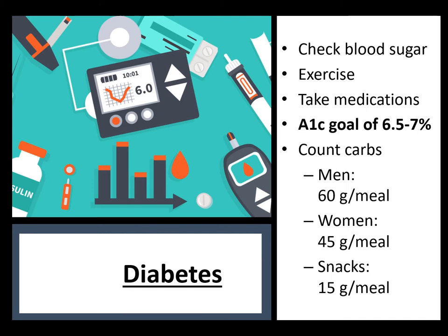Diabetes is very related to heart disease. If you do have diabetes, it's very important to check your blood pressure as often as possible, exercise often, and take your medications as prescribed. A goal for those with diabetes for their A1C would be 6.5 to 7%. Your A1C is a summary of your recent blood sugar shown as a percent — equivalent to a fasting glucose goal of 80 to 120 daily. Watch your carbs: men want 60 grams of carbs per meal, women 45 grams per meal, and snacks should not exceed 15 grams of carbs.